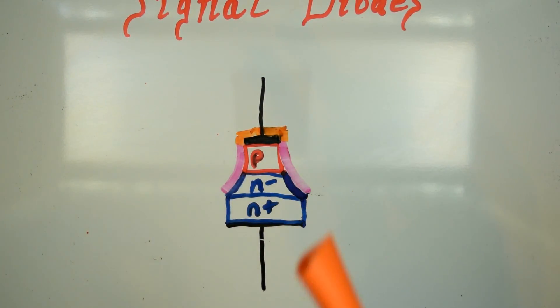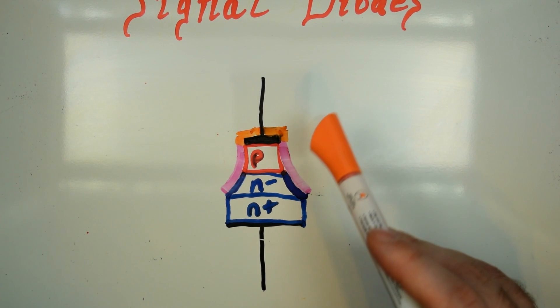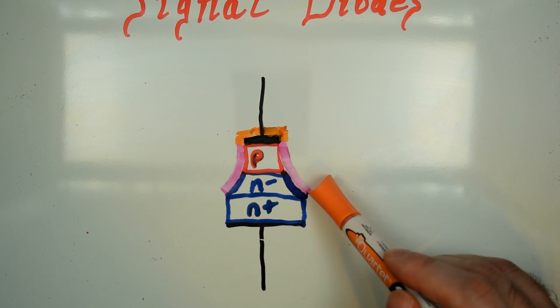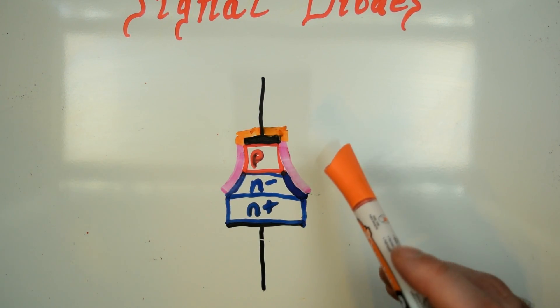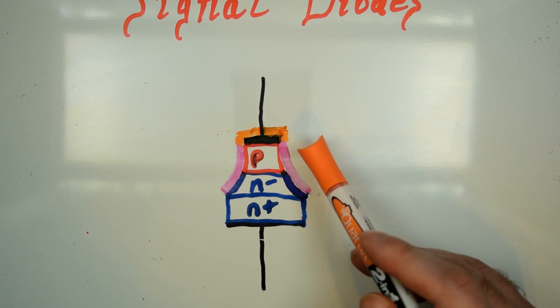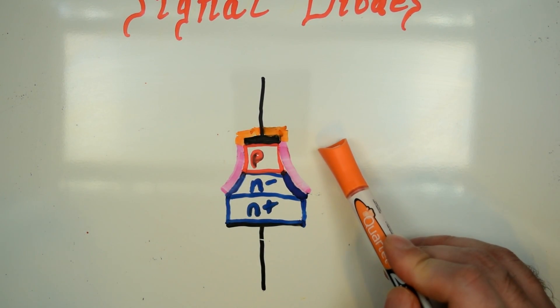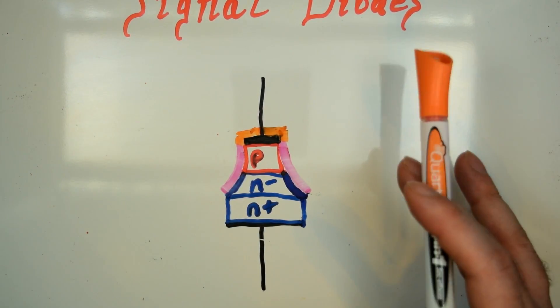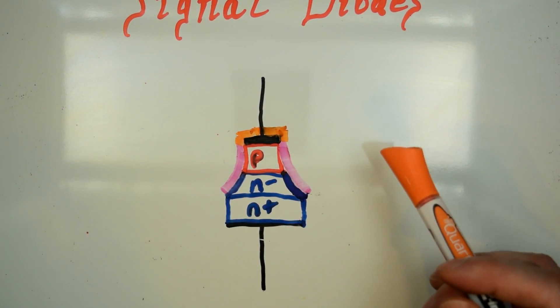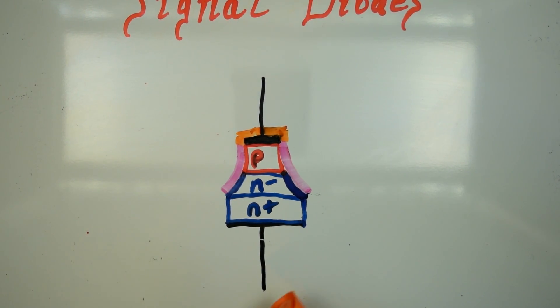So yeah, signal diodes used in RF situations. You'll sometimes see them most often made with germanium instead of silicon, which makes their forward voltage drop about 0.3 volts instead of 0.5 to 0.7 like silicon diodes.